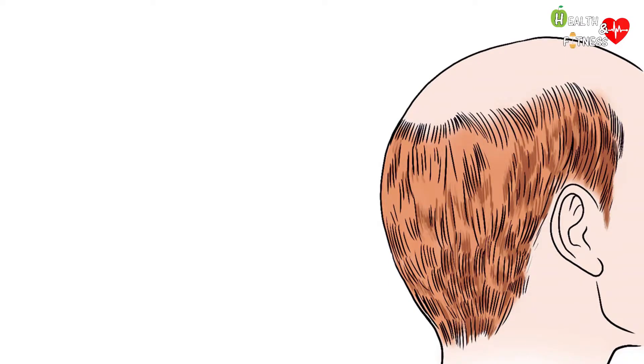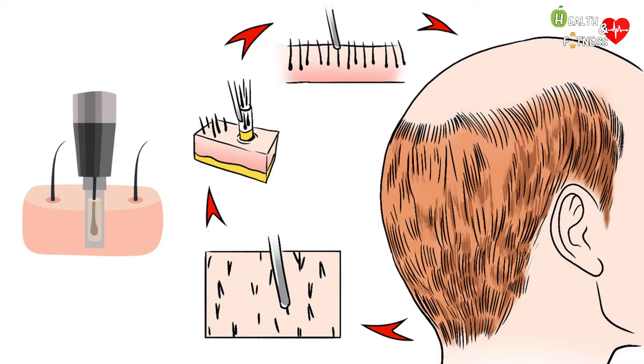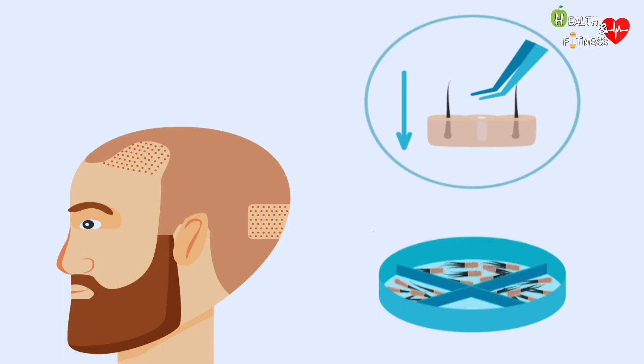It is an auto-transplantation technique and consists in taking follicular units from the patient's donor area under local anesthesia. In this way, every single capillary bulb is taken and then transplanted in the desired area after having cleaned it of any organic residues. They are usually taken from the back or side of the head where the hair is usually thickest.